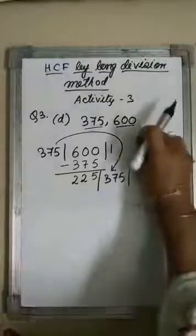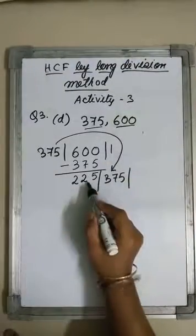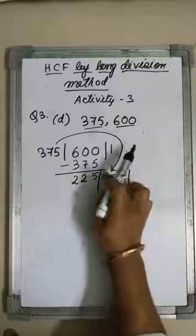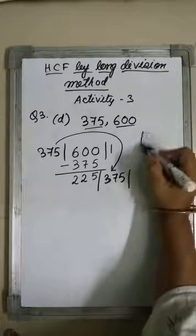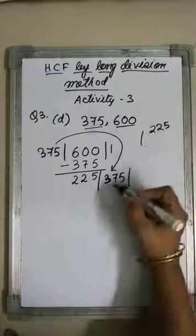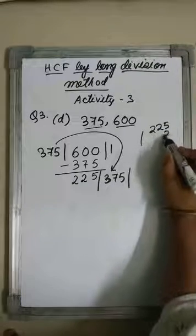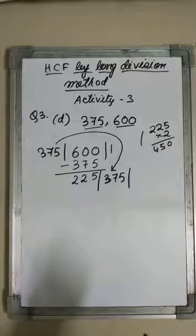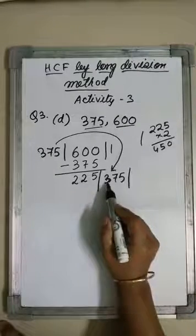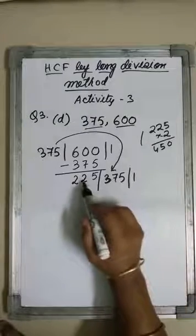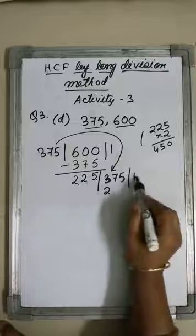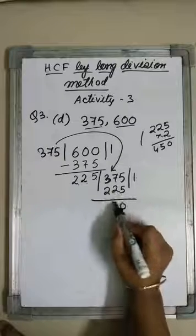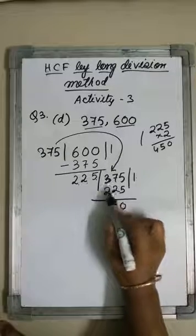The remainder becomes the new divisor and the divisor becomes the new dividend. Now divide 375 by 225. 225 into 2 is 450, which is greater than 375, so it is divisible only 1 time. Write 225 into 1 is 225. Subtract: 5 minus 5 is 0, 7 minus 2 is 5, 3 minus 2 is 1, giving remainder 150.